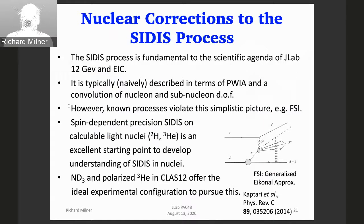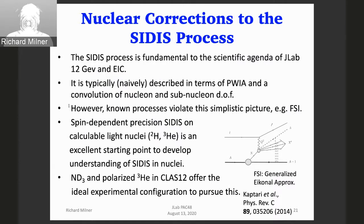More generally, the SIDIS process is fundamental to the scientific agenda of JLAB and also the electron ion collider. We typically describe it in terms of a plane wave approximation and a simple convolution of nucleon and subnucleon degrees of freedom. Known processes violate this — probably most straightforward are final state effects. There's a generalized eikonal approximation with not huge but important effects. Comparing the deuteron and helium-3 in the same CLAS12 detector with spin is unprecedented and should, together with theory, offer really important advances — insights that can be pursued with SoLID or with EIC later.